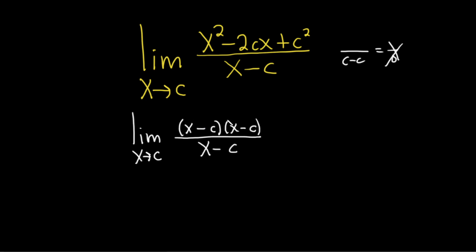Let's see. x times x is x squared. That's easy. Negative c times negative c is positive c squared. No problems there. The middle term is negative cx, the outer term is negative cx. When you add them up, you get negative 2cx. This looks okay.